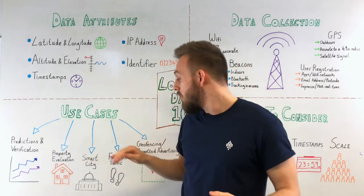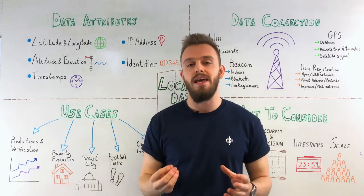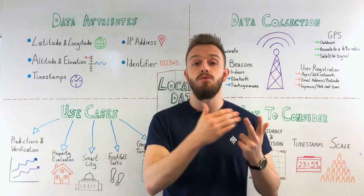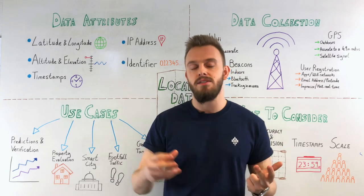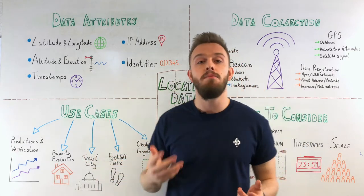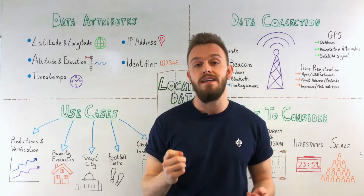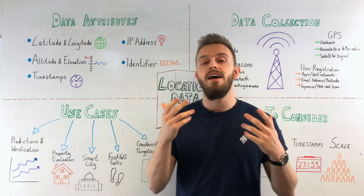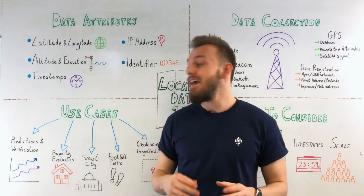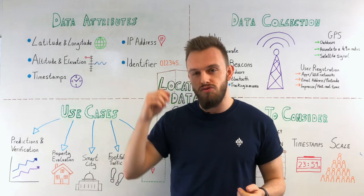Taking that to a grander scale, we've got things like smart cities — government initiatives to make a city the best possible place for its inhabitants, whether that's the placement of playgrounds, parks, public facilities, or even looking at where the best place to put doctors or hospitals might be. Foot traffic is really the goldmine for location data — it shows the amount of people who walk past an area and has many different use cases, and can especially help brick and mortar stores find the right location.